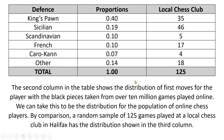We're imagining that we looked at an online chess site. I literally did look at an online chess site and checked out the proportion of times each of these defenses was played out of millions of games — at least 10 million games, so a huge number. These are the proportions that I found, and we can take these proportions as a population distribution — essentially the probability that each defense is played in a randomly selected chess game from that online chess club.